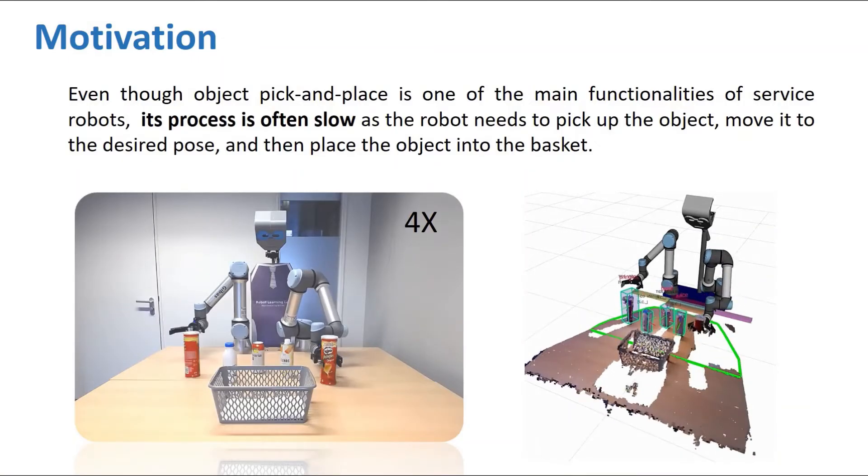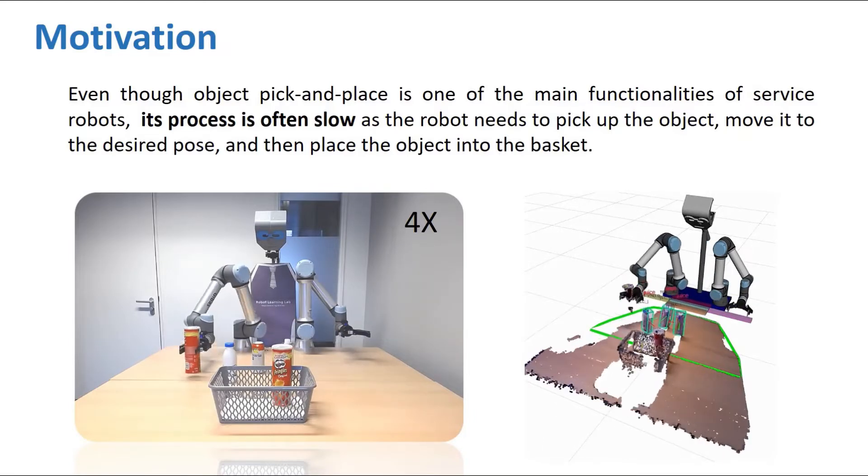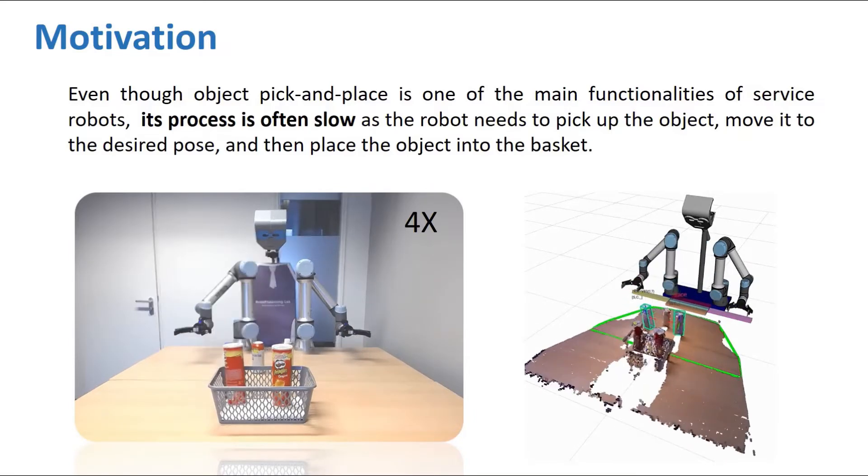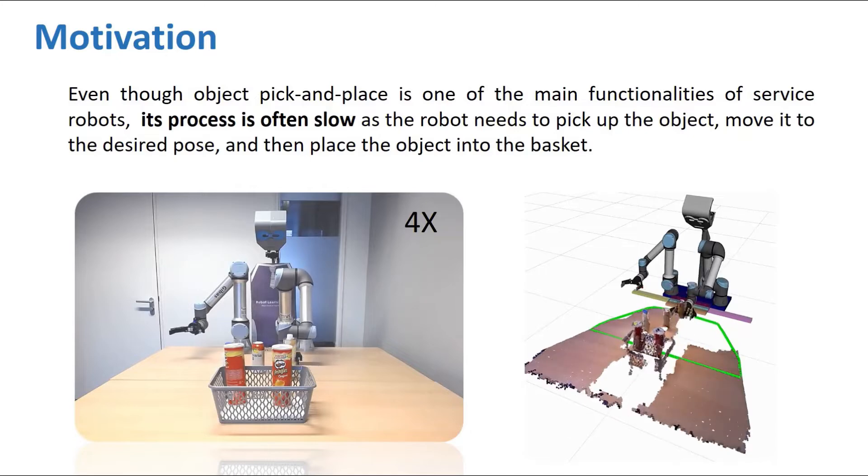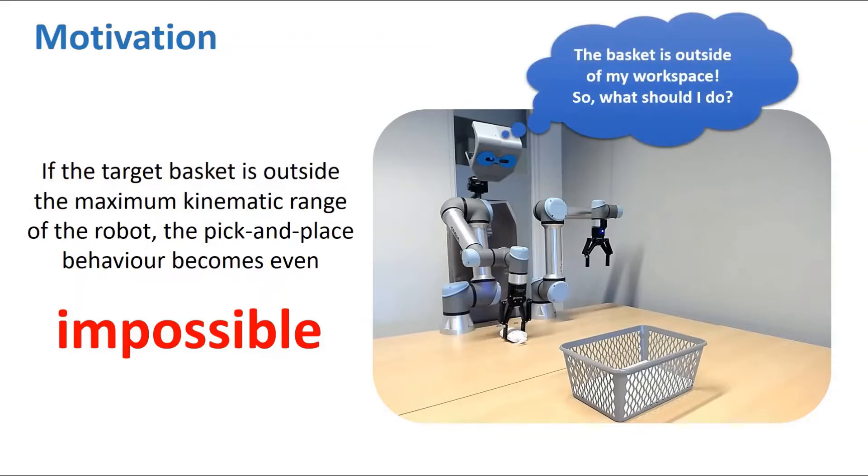Even though object pick and place is one of the main functionalities of service robots, its process is often slow, as the robot needs to pick up the object, move it to the desired pose, and then place the object into the basket. If the target basket is outside the maximum kinematic range of the robot, the pick and place behavior even becomes impossible.